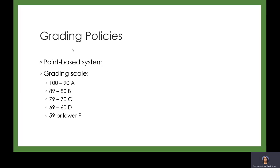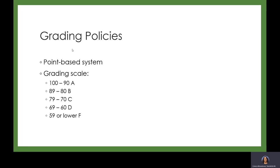My grading policies use a point-based system with a normal grading scale: 90+ is an A, 89-80 is a B, 79-70 is a C, 69-60 is a D, and 59 or lower is an F. I don't use weighted grades — just that point-based system.